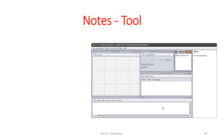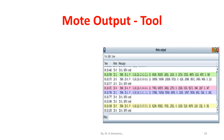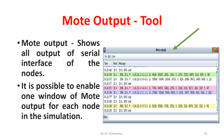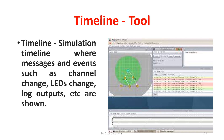The next tool is the Nodes tool. Nodes is a simple notepad for taking notes about the simulation. Mote Output tool shows all output of the serial interface of the nodes. It is possible to enable one window of Mote Output for each node in the simulation. Timeline shows the simulation timeline where messages and events such as channel change, LEDs change, and log outputs are shown.